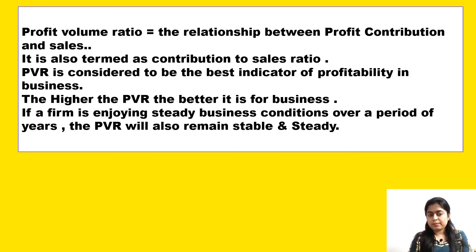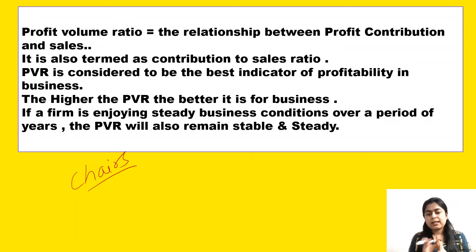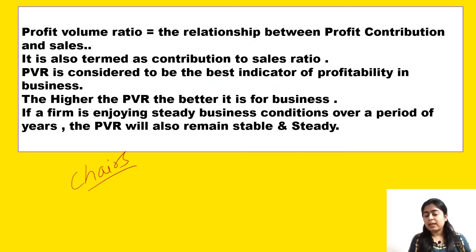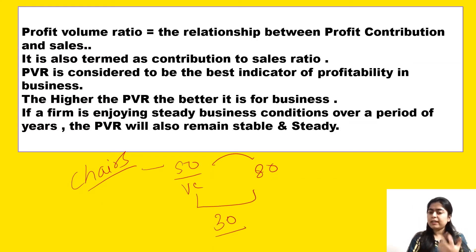Let's understand this with an example. Suppose a firm manufactures chairs. The raw materials needed are wood and polishing material, and labor is done manually. If the manufacturing cost of a chair is rupees 50, that is the variable cost, and they sell the chair at rupees 80, the difference of rupees 30 is not entirely profit.